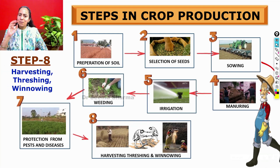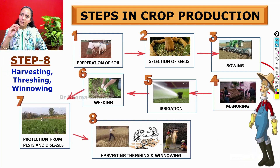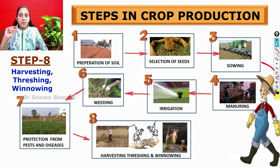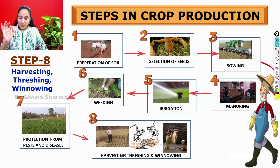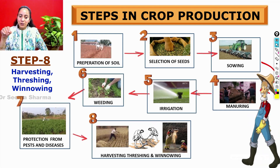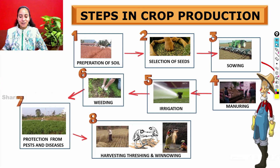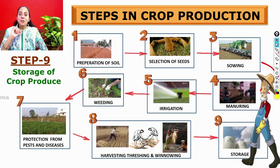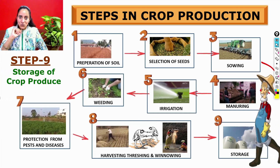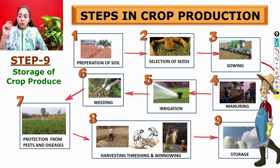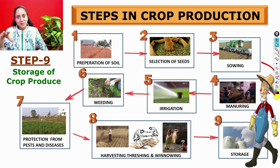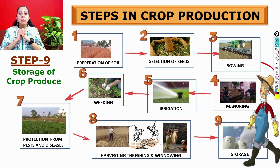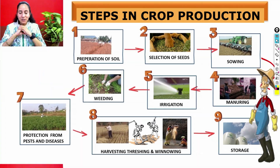In the eighth step, by this time our crop will be fully grown and it will be harvested. So harvesting, threshing, and winnowing are covered in step eight. And lastly, step nine is storage of the crop produce — the farmer will go for storage on a small scale or large scale. So these are the nine steps of methods of crop production.